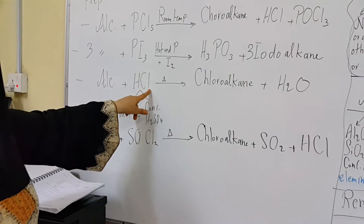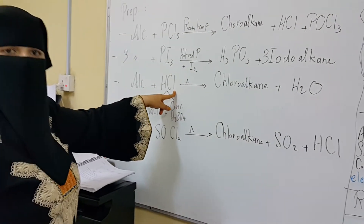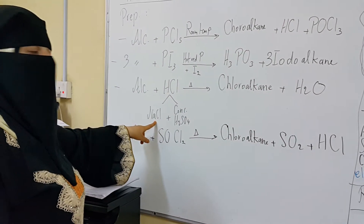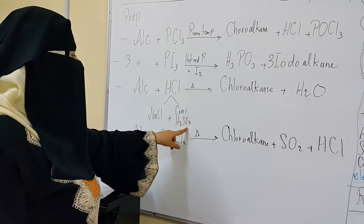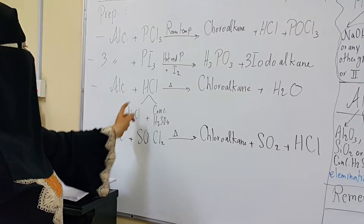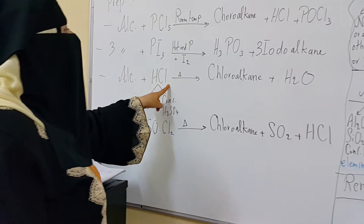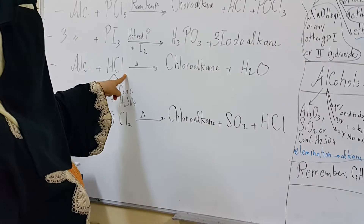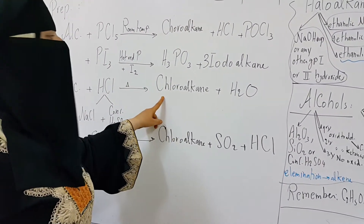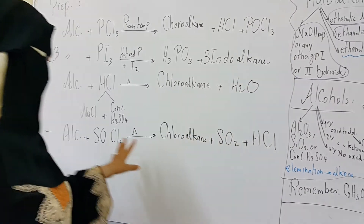Alcohol can react with HCl gas, which is prepared in situ by reaction of sodium chloride in the solid state with concentrated hot sulfuric acid. These together release HCl gas that undergoes a nucleophilic substitution reaction with alcohol to give chloro-alkane plus water.